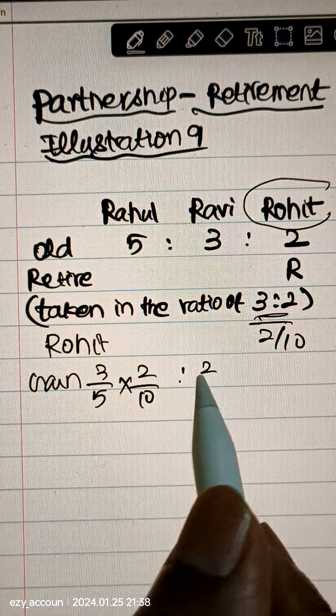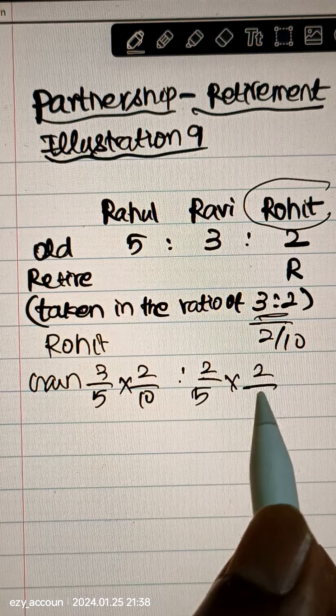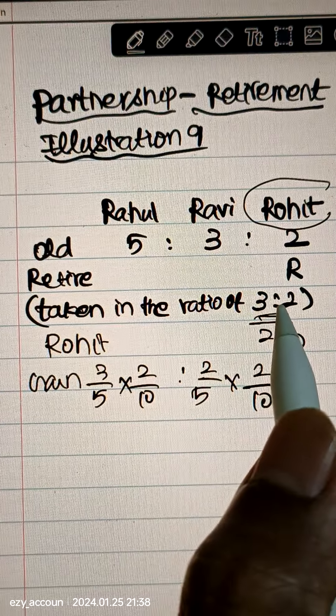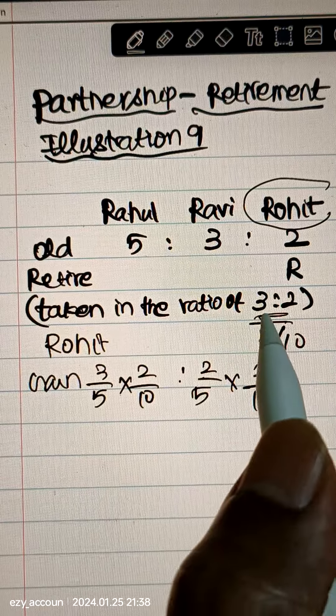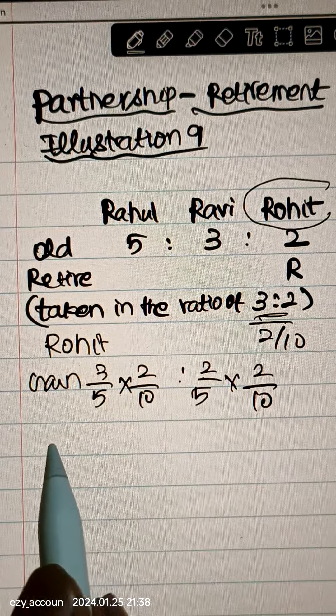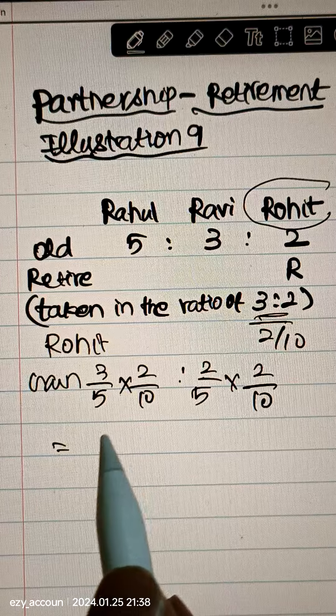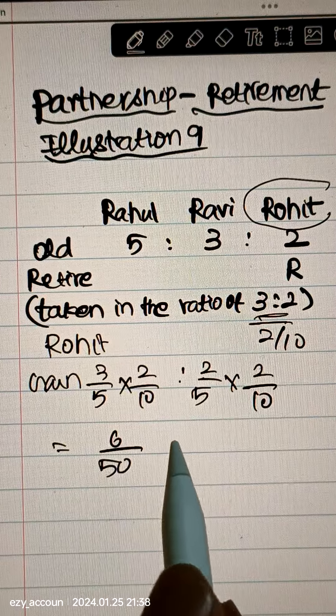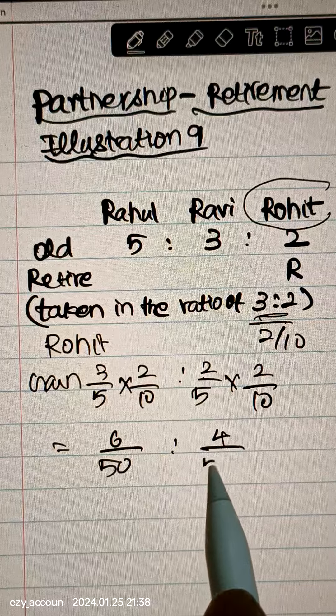Ravi is taking 2 by 5 into 2 by 10. 3 is to 3 by 5. 5 is 3 plus 2. Which is equal to 6 by 50 to 4 by 50.